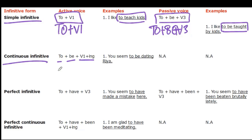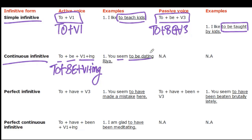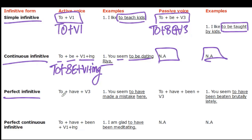The continuous infinitive is formed with 'to + be + continuous form of a verb.' For example: 'You seem to be dating Ria.' This is in the active voice. There is no passive structure for the continuous infinitive, so we can't have a passive example for this form.